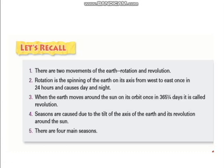To recall: the earth has two movements — rotation and revolution. Rotation is the spinning of the earth on its axis from east to west, once in 24 hours, causing day and night. When the earth moves around the sun on its orbit once in 365 days, that is called revolution. Seasons are caused due to the tilt of the earth's axis and its revolution around the sun. There are four main seasons: summer, winter, spring, and autumn. Thank you.